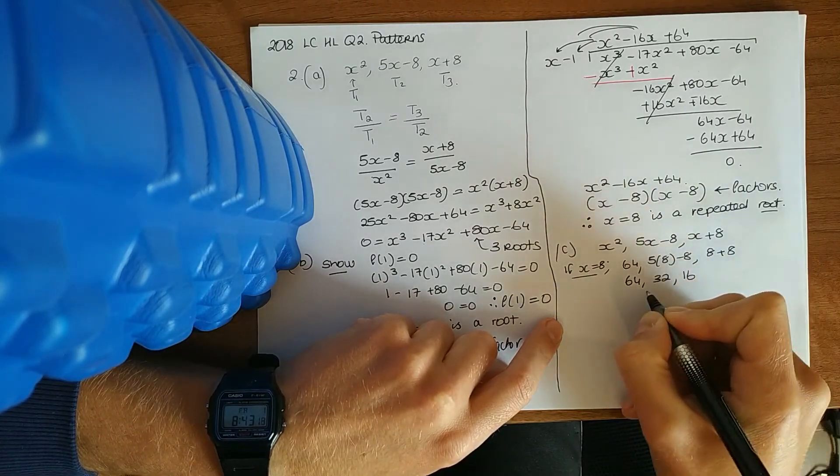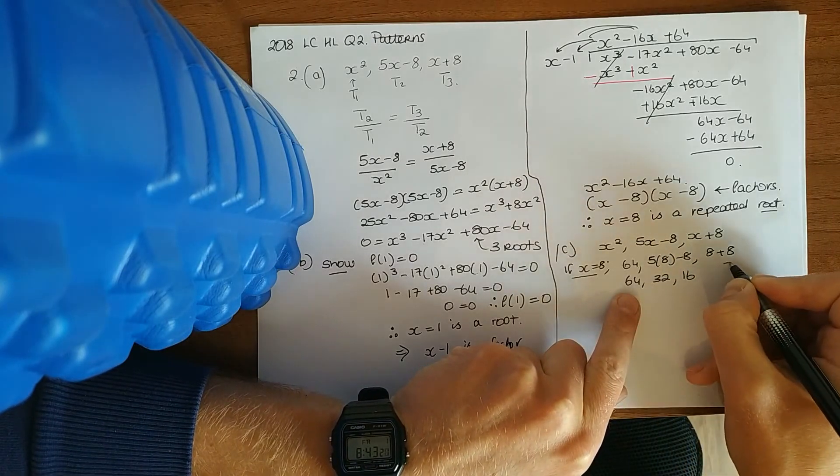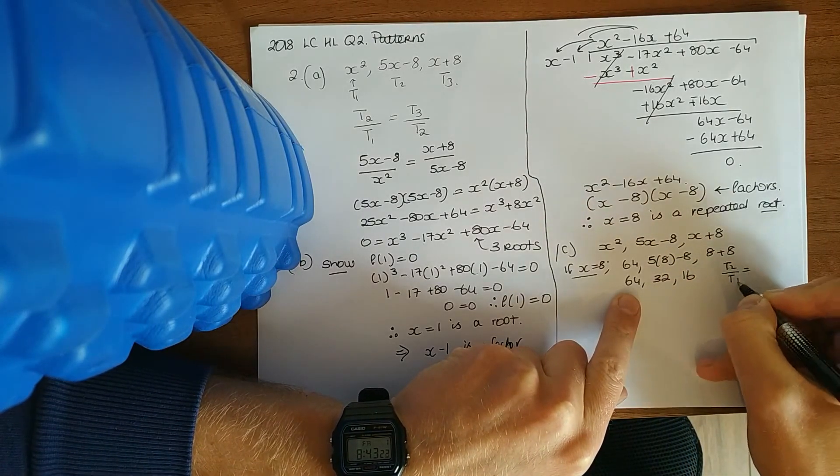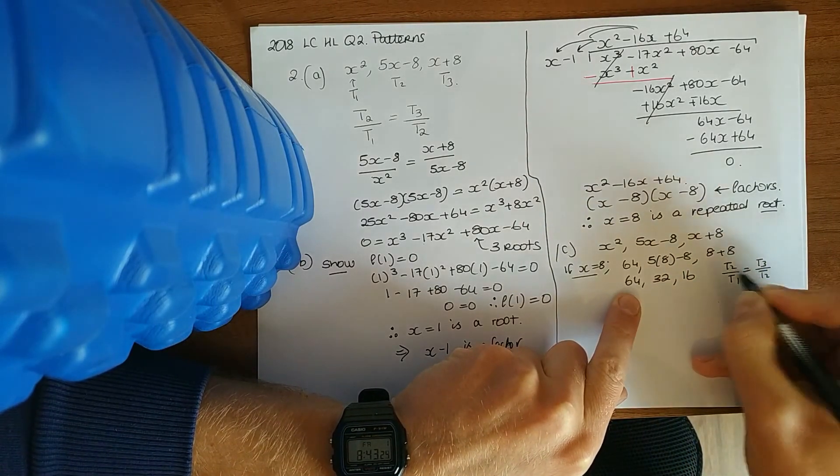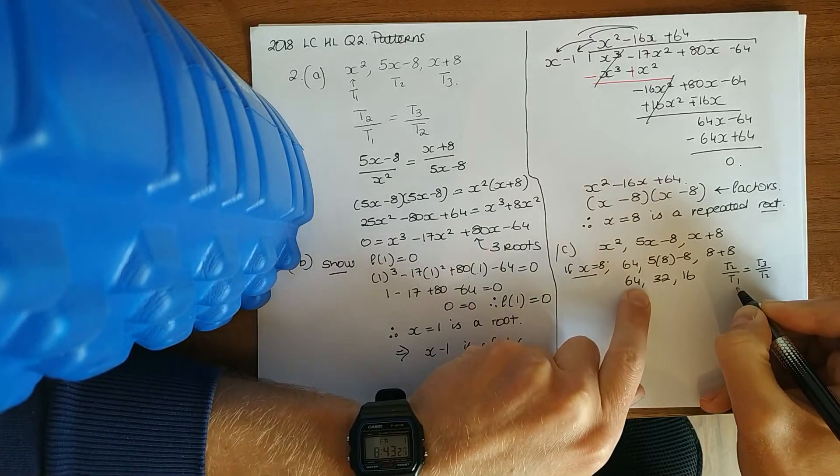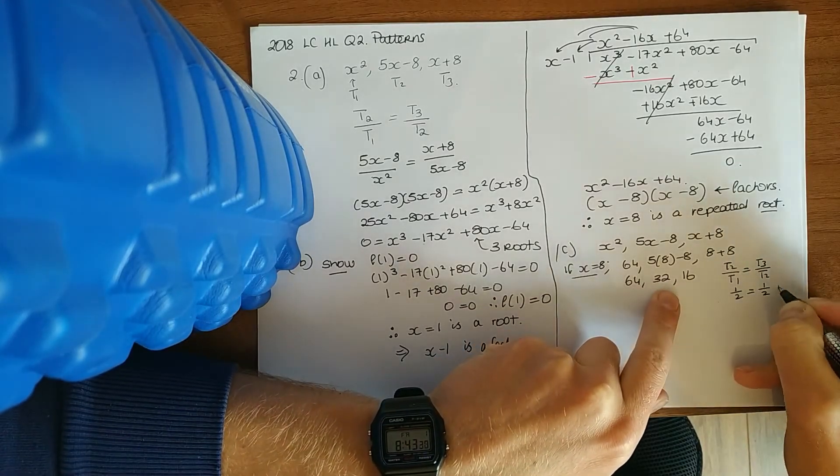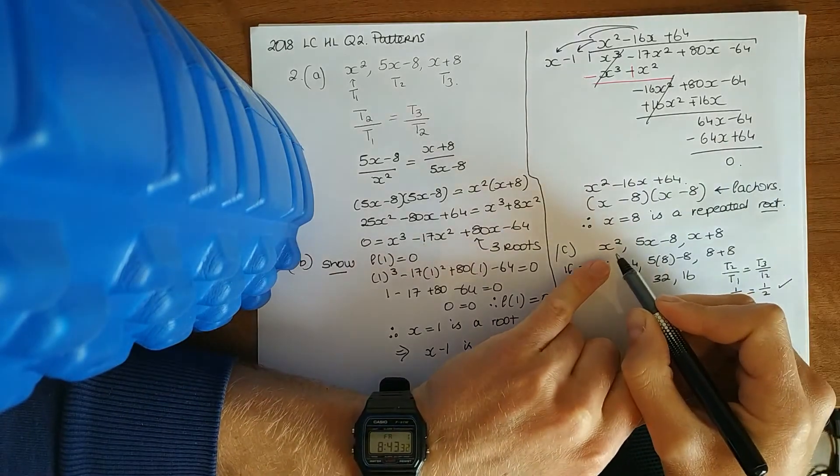We know this is right, because if we divide term 2 over term 1, same as term 3 over term 2. So term 2 over term 1: 32 over 64 is a half. 16 over 32 is a half. So that works.